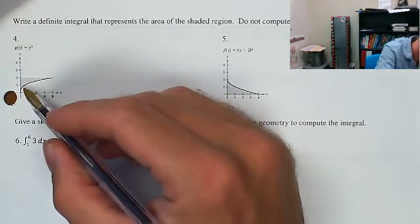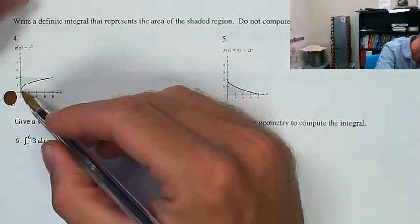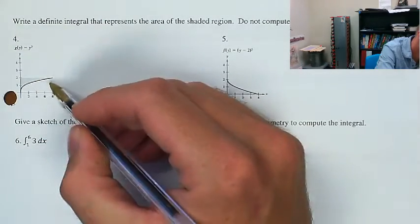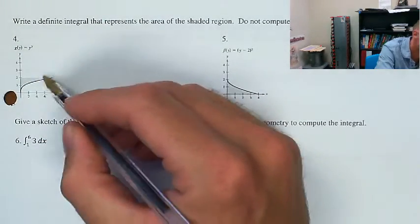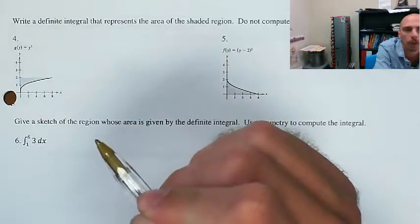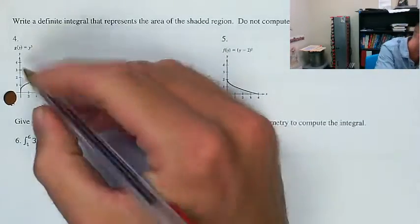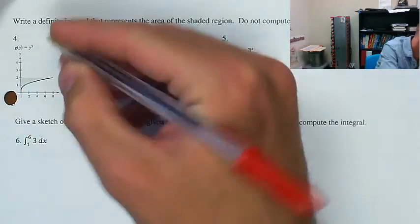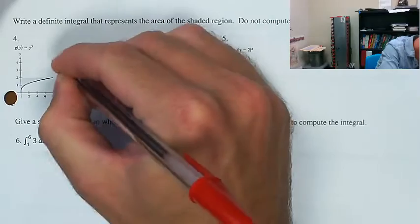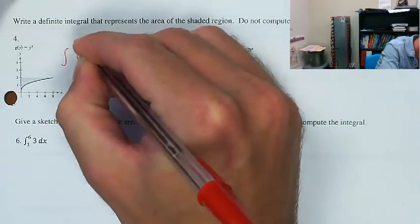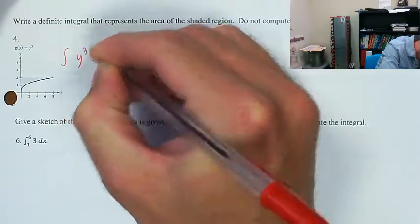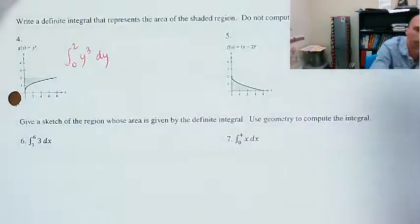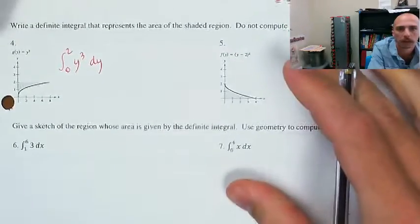What this is doing is — you can say this is 2 minus f(x) if you know what f(x) is — but they give us g(y). It's the area underneath the graph of g(y) as y runs from 0 to 2. So it's going to be the integral of y³ as y goes from 0 to 2. And that's all they want — just write an integral.